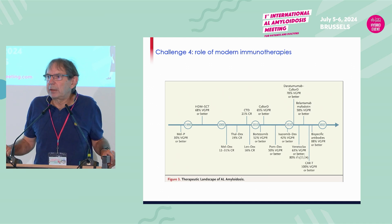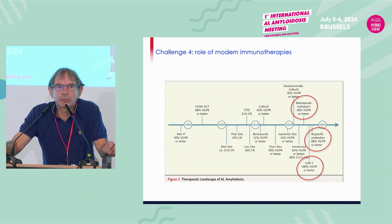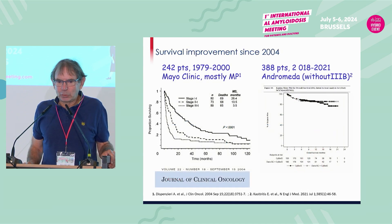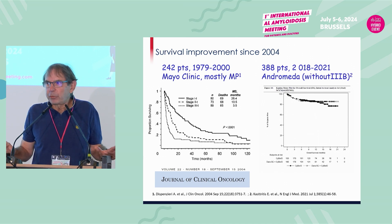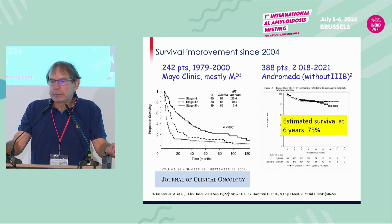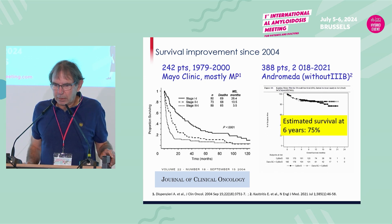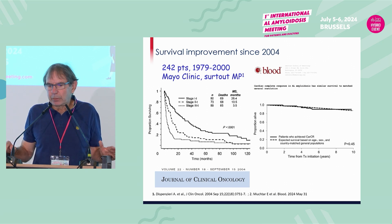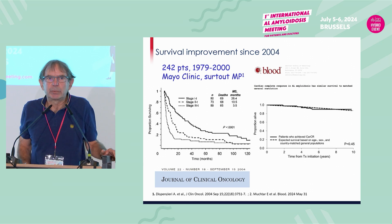The first challenge also includes the role of modern immunotherapy: belantamab, bispecific antibodies, and CAR-T cells — and the next speaker will address this. We went from the survival rates in 2000 to the survival in the Andromeda study, with estimated survival of 65% at six years. And even in a very recent paper, if you have a complete cardiac response, survival is exactly the same as the general matched population. So really, huge progress in the treatment of this disease.